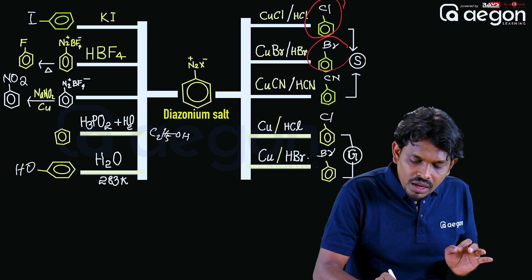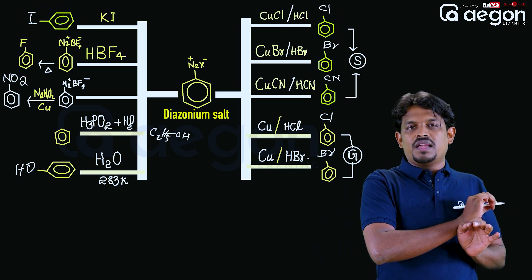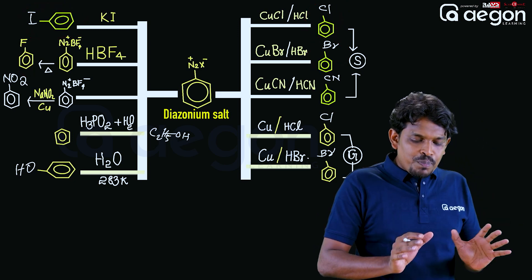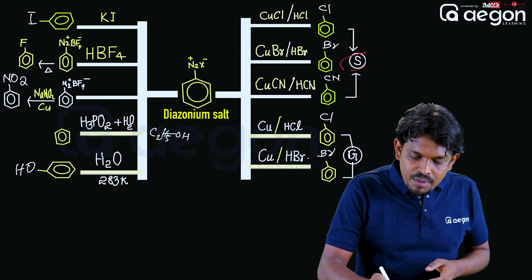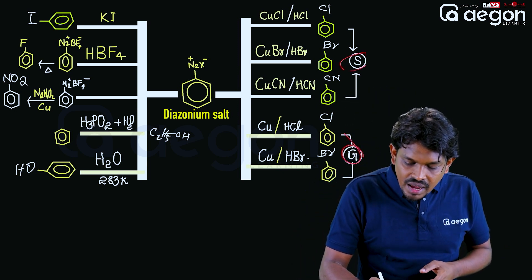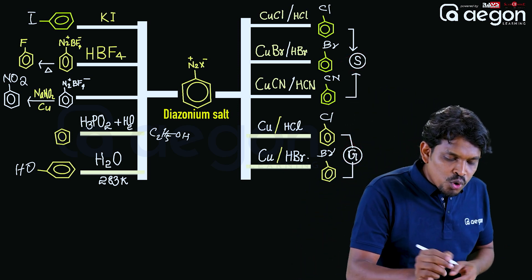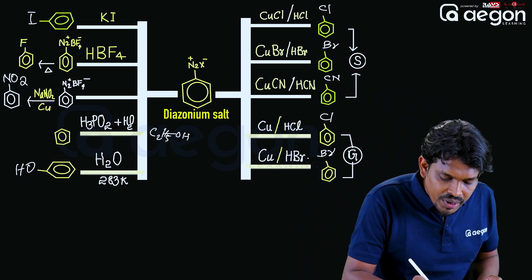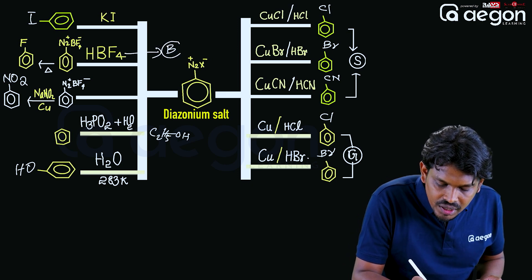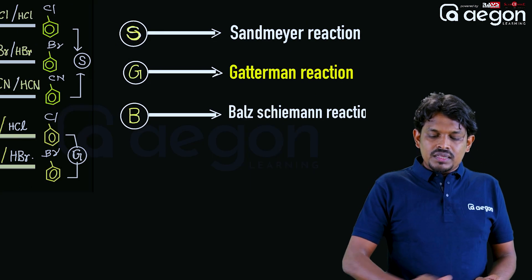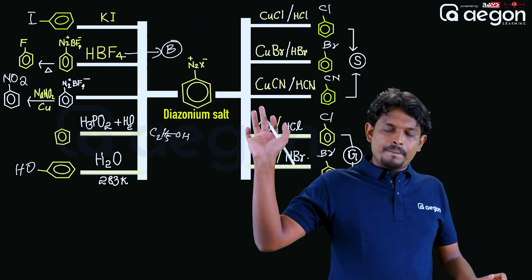From these reactions we prepare chlorobenzene, bromobenzene, iodobenzene, and fluorobenzene. The named reactions involved are: Sandmeyer's reaction, Gattermann's reaction, and the Balz-Schiemann reaction for fluorobenzene preparation.